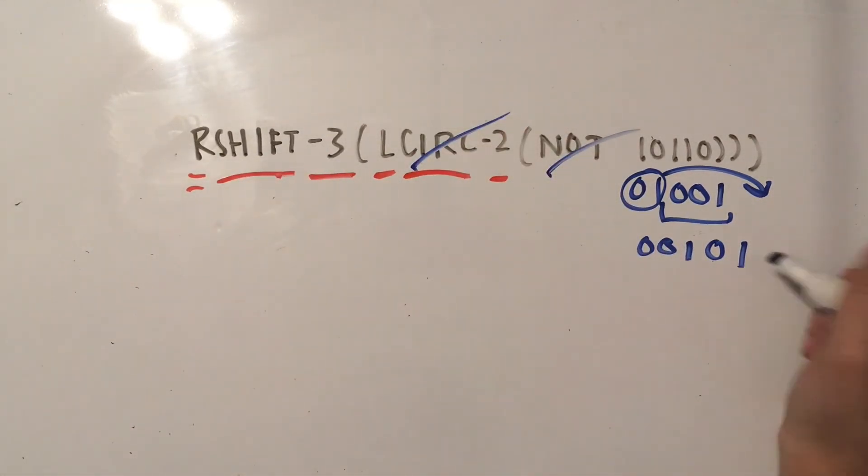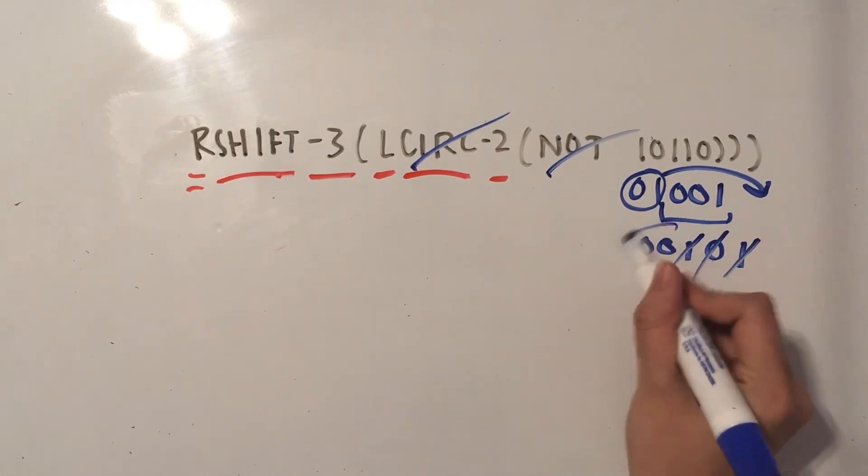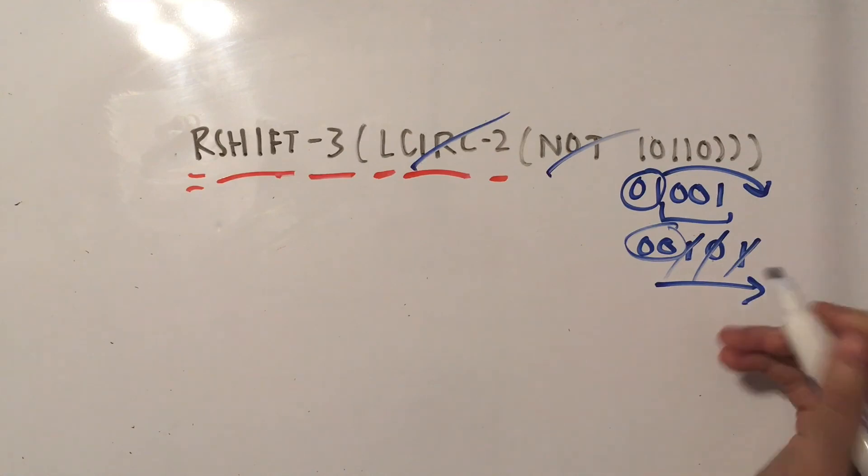And then R shift 3. So remember, we're starting from the right, taking 1, 2, 3, and then shift these 2 over. So 00000. And that's our answer.